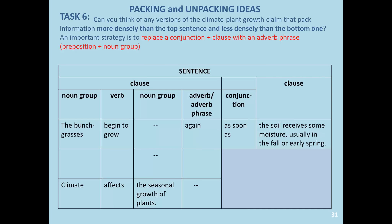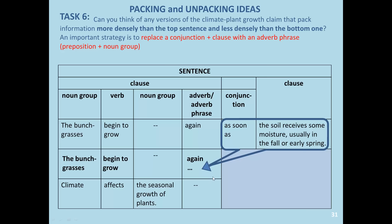For task six, can you think of any versions of the climate-plant-growth claim that pack information more densely than the top sentence and less densely than the bottom one? One particular strategy is to replace a conjunction and a clause with an adverb phrase — that is, a preposition and a noun group. So, starting with 'the bunch grasses begin to grow again,' try to pack the meaning from the conjunction and clause into an adverb phrase.